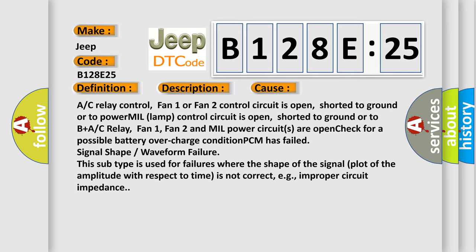Signal shape or waveform failure. This subtype is used for failures where the shape of the signal plot of the amplitude with respect to time is not correct, e.g., improper circuit impedance.